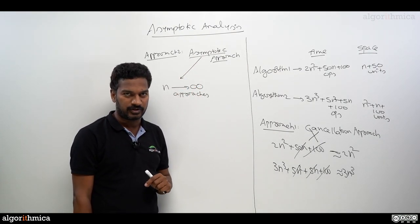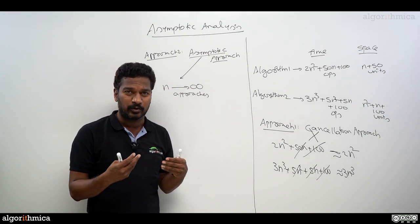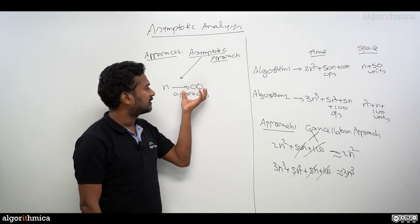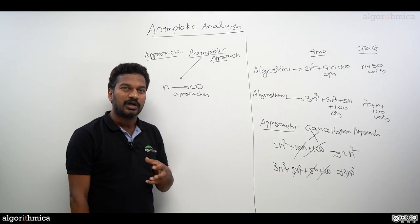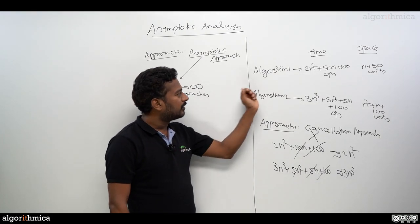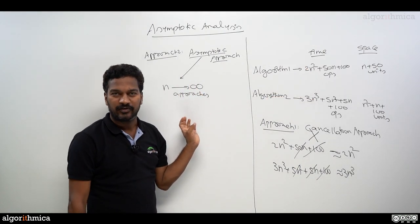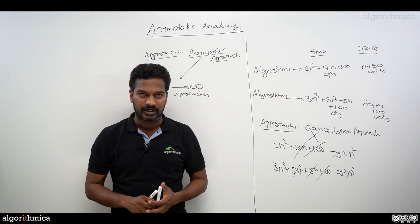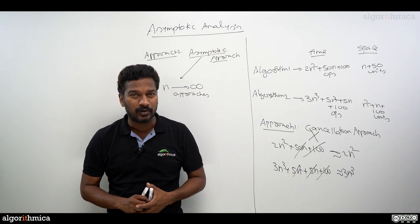But we do not know what is the meaning of n approaches to infinity here. Let's get the intuition behind what we mean by n tends to infinity. Then we'll try to see the simplifications for this kind of functions. Let's go to the visualization to understand asymptotic meaning here.